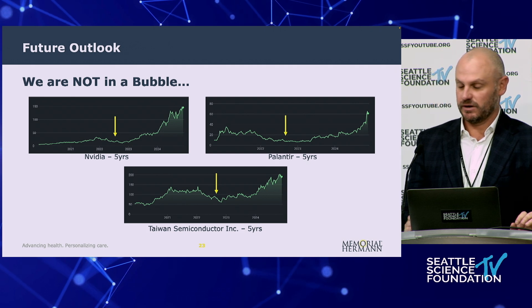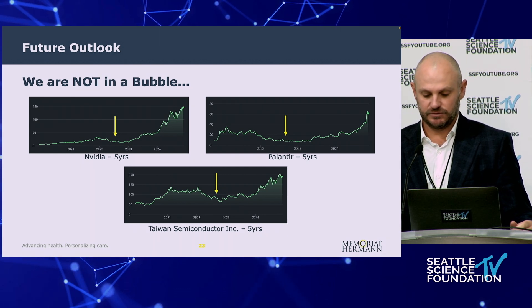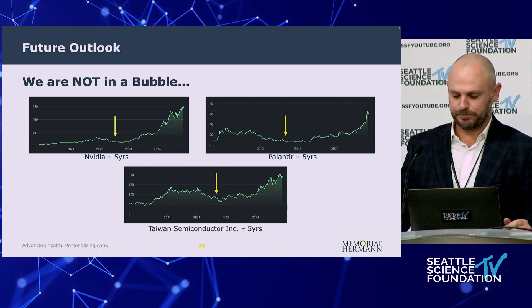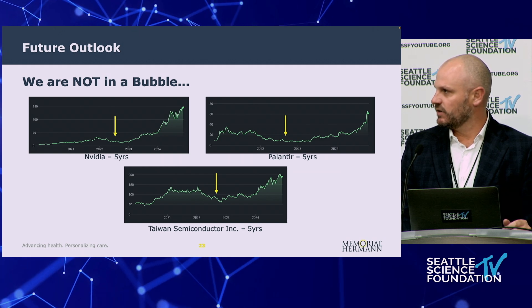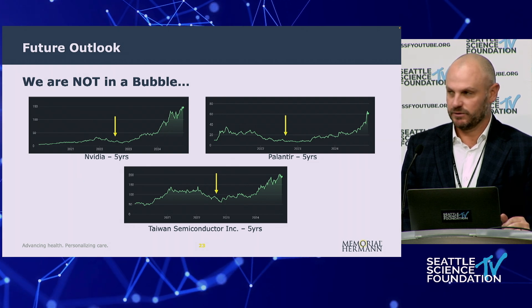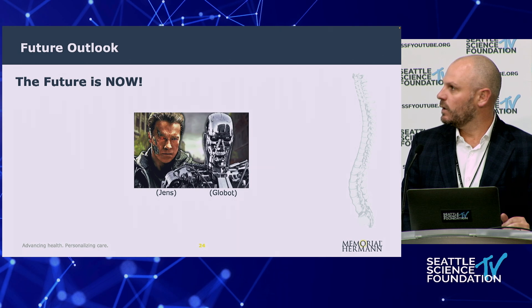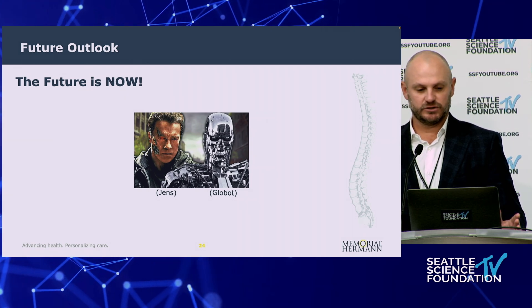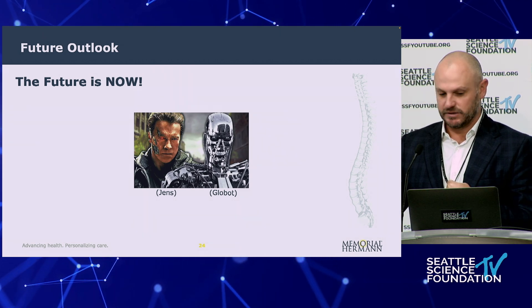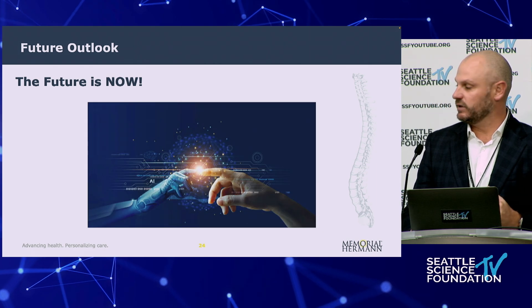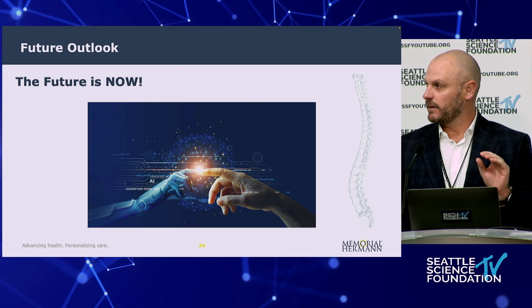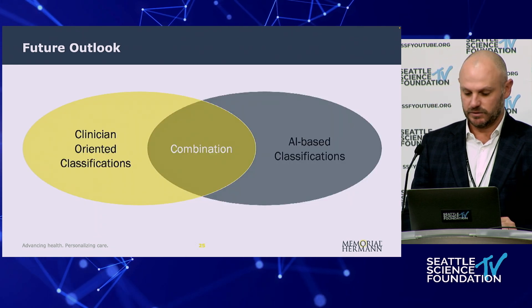We're not in a bubble. Artificial intelligence is here to stay. If you look at the advent of ChatGPT in November of 2022 and then look at some of the leaders in the public space regarding this, their stock prices on Wall Street have done nothing but go up since then. If it was a bubble, it would have already popped. The future really is now. A lot of surgeons in the past, including myself, have fought with technology a little bit — as evidenced by this picture of Jens about to go to battle with the Globot. But we have got to embrace this and learn how to harness the technology of AI, because it's only going to get bigger, better, and faster in the years going forward.